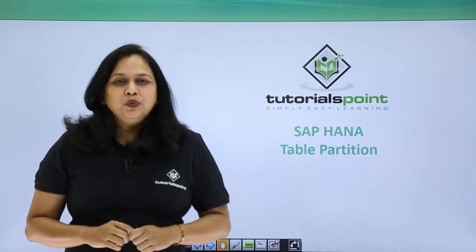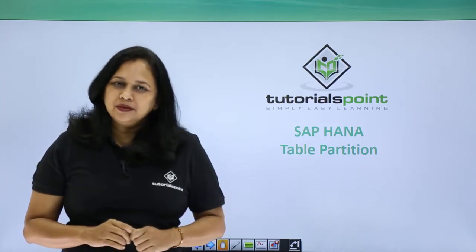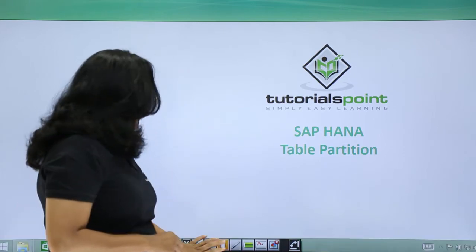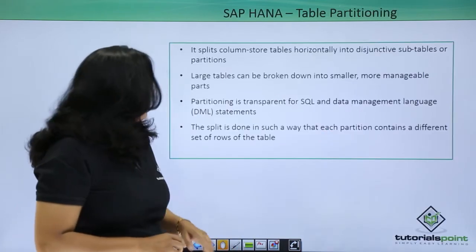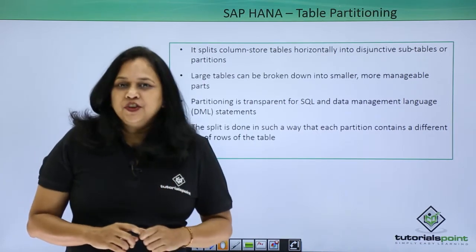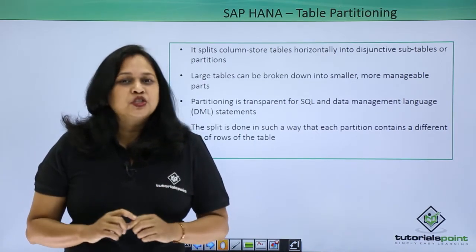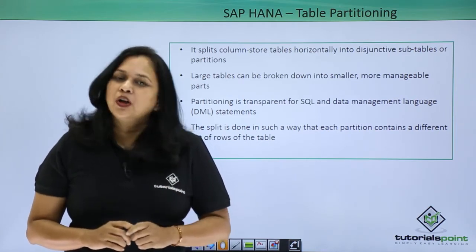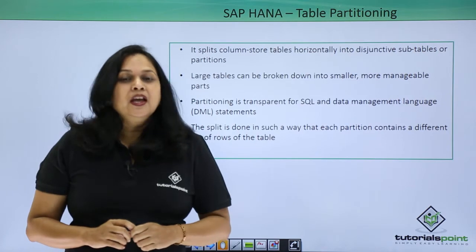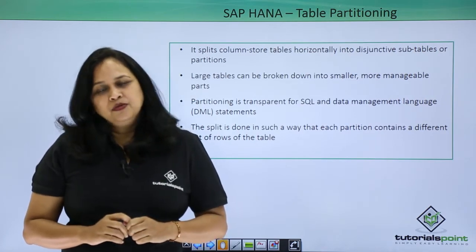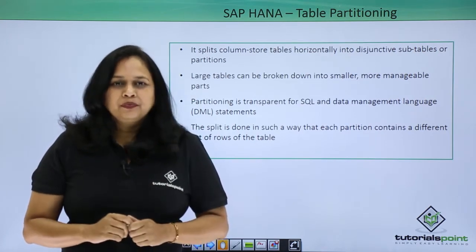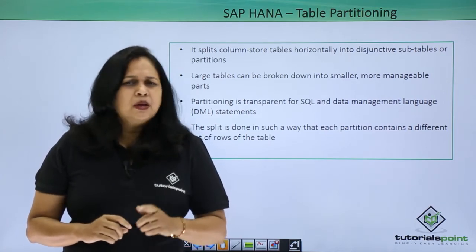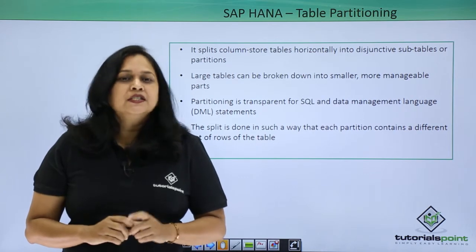In this video, we will see how to partition a table in SAP HANA database. The partitioning feature of the SAP HANA database splits column store tables horizontally into disjunctive subtables or partitions. In this way, large tables can be broken down into smaller, more manageable parts. Partitioning is typically used in multiple host systems, but it may also be beneficial in single host systems.